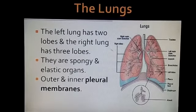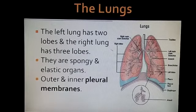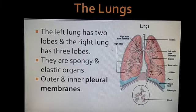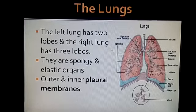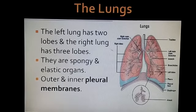The left lung has two lobes and the right lung has three lobes. Lobes means parts. The lungs are spongy and elastic, which allows air to easily enter and exit. This is a very important part of the lungs.